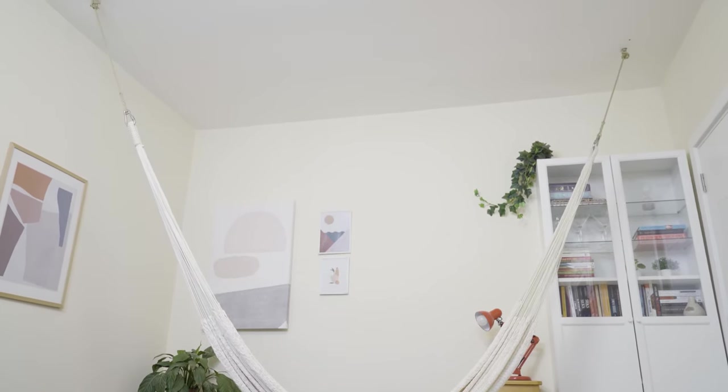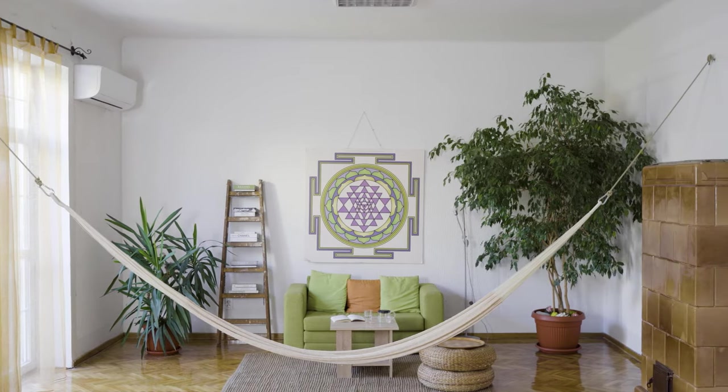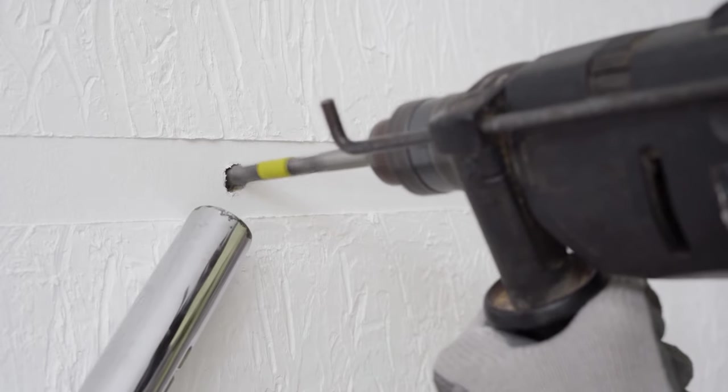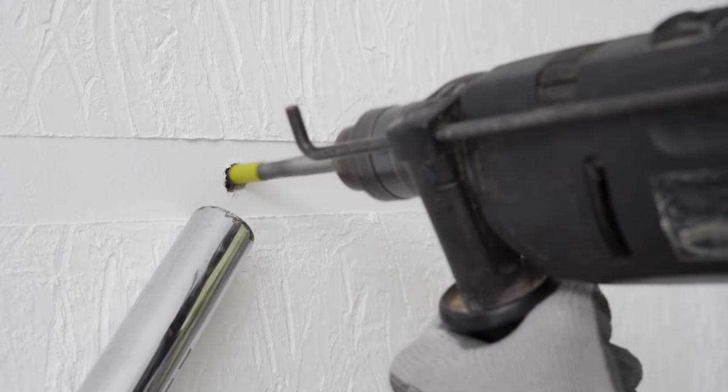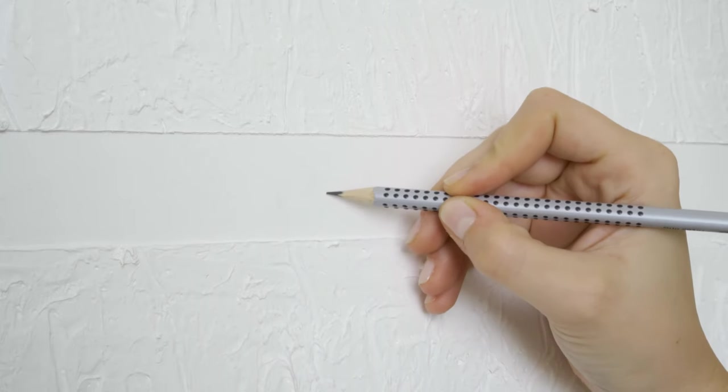First, suspending the hammock from the ceiling. Second, hanging it between two load-bearing walls. Both options require you to drill holes, but as you will see, the process is not too difficult, and we will guide you through each step of the process.